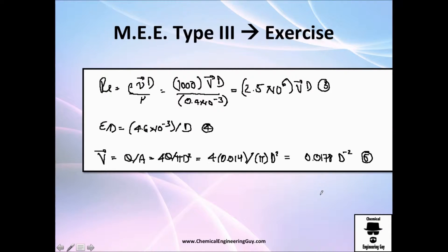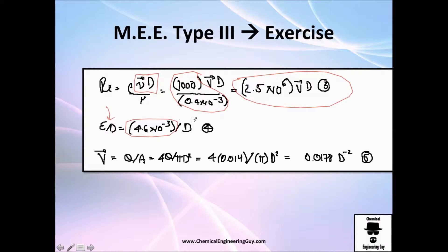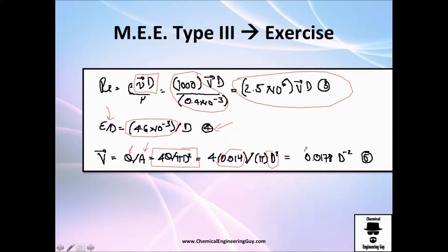Now let's set up the Reynolds number equation. We have everything except diameter and velocity, so call this equation 3. For relative roughness: since it's steel, we have the roughness value, but the diameter is unknown — leave it as a function, call this equation 4. Velocity equals volumetric flow rate divided by area, which in terms of diameter is Q divided by (π/4 × D²). We have Q; π and 4 are constants; diameter is unknown — call this equation 5.